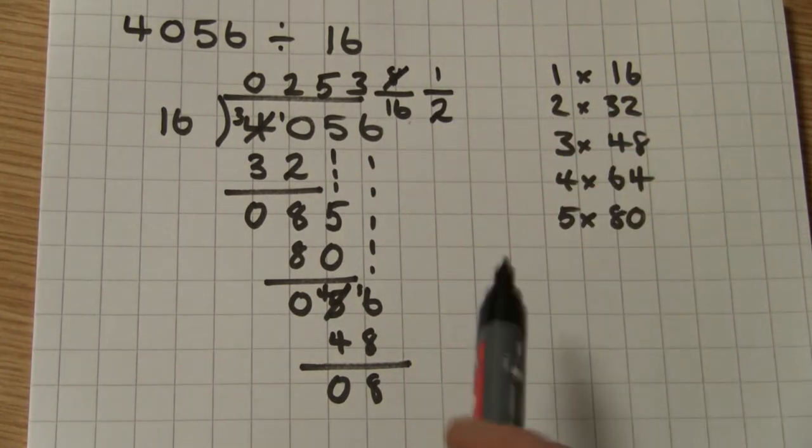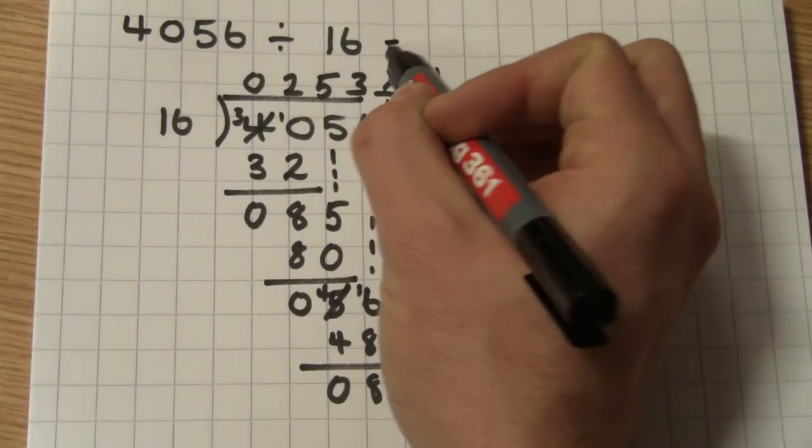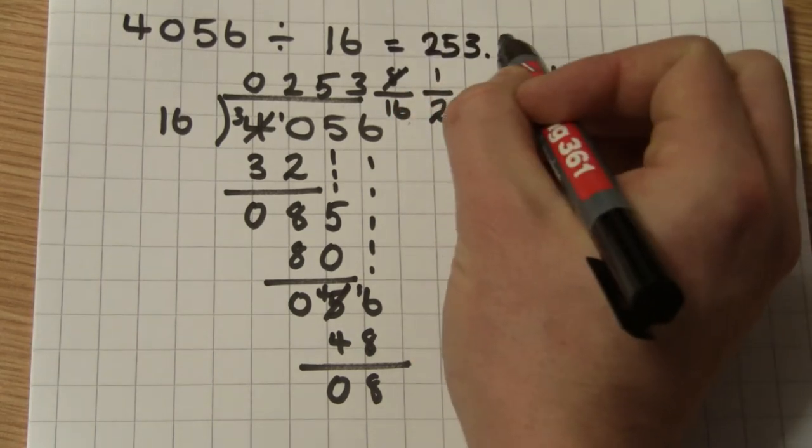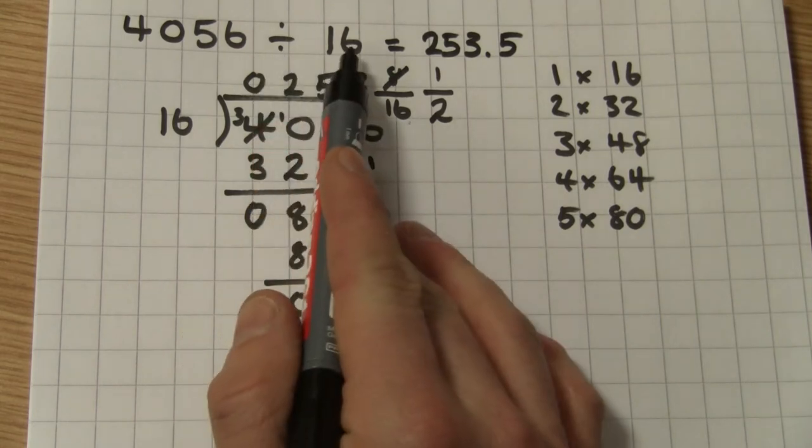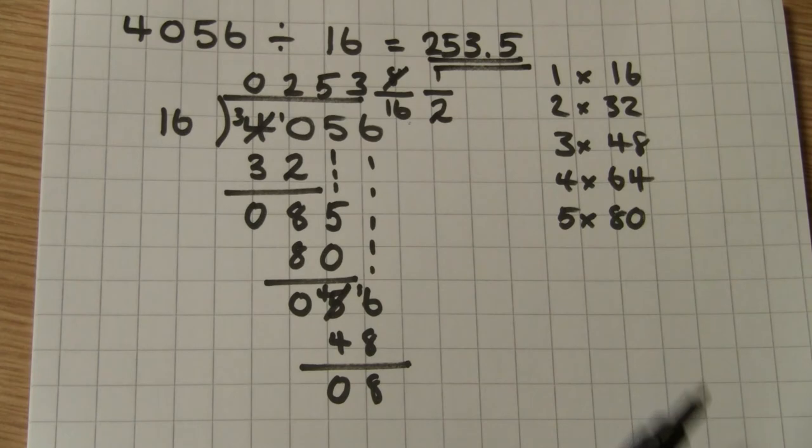Now, referring back to other parts of the maths curriculum, I know a half is 0.5. So I can actually write this answer as 253.5. So 4056 divided by 16 is 253.5. Job done.